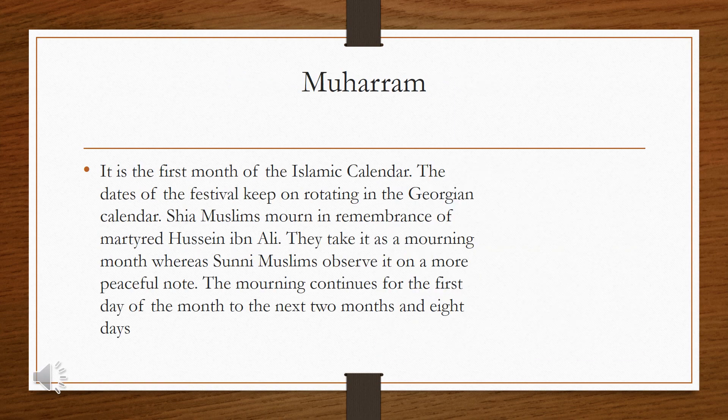The next festival is Muharram. It is the first month of the Islamic calendar and the dates of the festival keep on rotating in the Gregorian calendar. Shia Muslims observe the remembrance of Hazrat Hussein bin Ali and take it as a mourning month, whereas Sunni Muslims observe it on a more peaceful note. The mourning continues from the first day of the month for the next ten days.